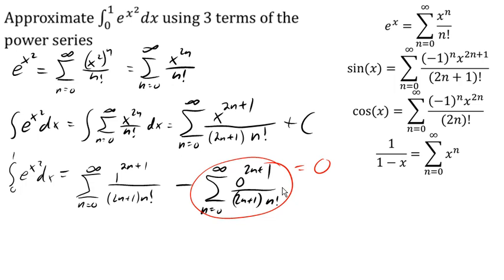Now here, this also simplifies nicely, because 1 to the 2n plus 1 is just 1. So we're going to get 1 over 2n plus 1 times n factorial.